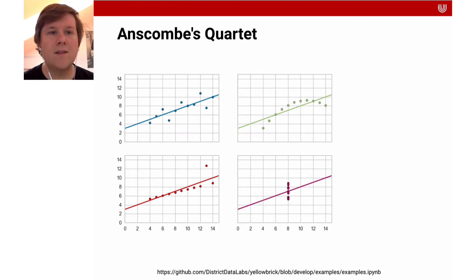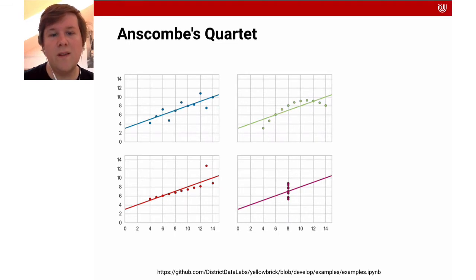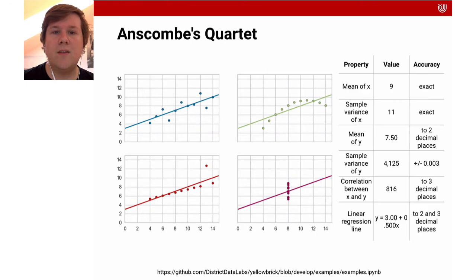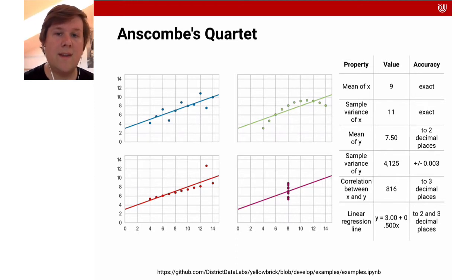Here's a dataset called Anscombe's Quartet. You can pause the video and look at it, think about what the datasets have in common, how they're different, and what they could represent. When you compute the statistics, you find they all share the same mean, the same sample variance, and the same correlation between X and Y up to three decimal points. And if you fit a linear regression, you get exactly the same decision boundary for all of them.